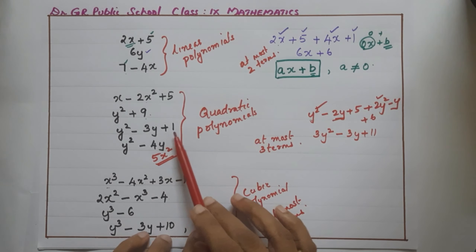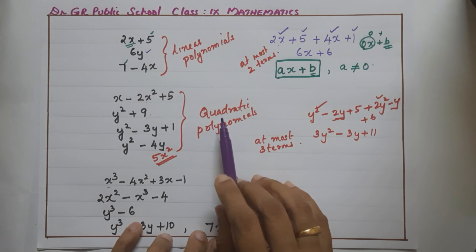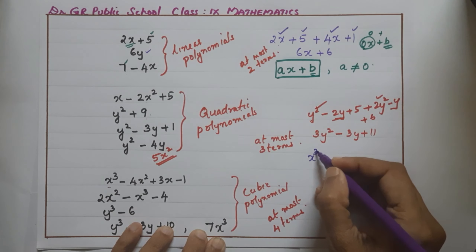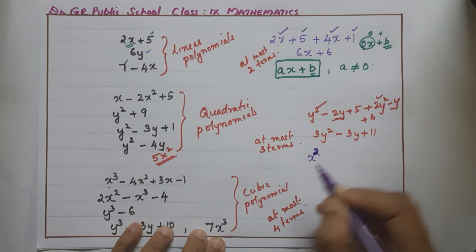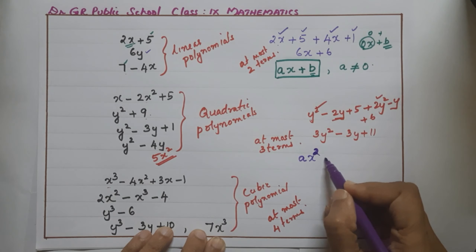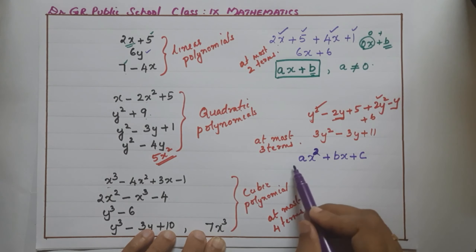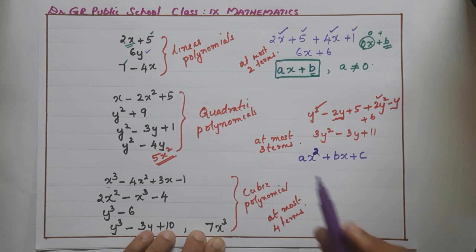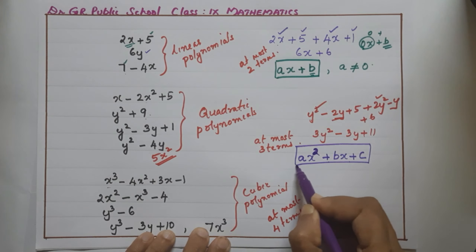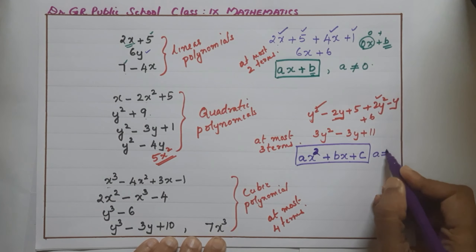What is the general form of a quadratic polynomial? The highest power should be 2. So it is ax² + bx + c, where a is not equal to 0. If a were 0, the x² term would vanish and it would become a linear polynomial instead.